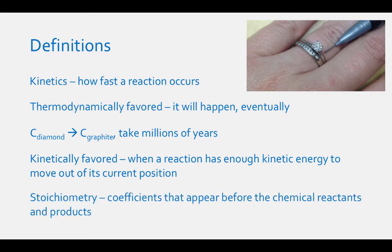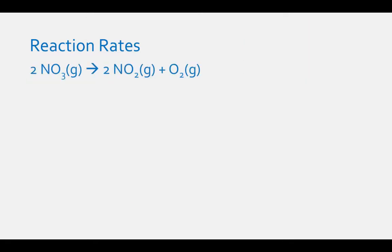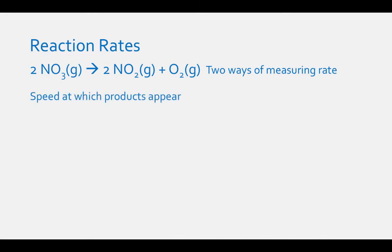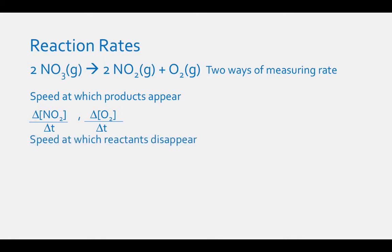The stoichiometry of a chemical reaction are the coefficients that appear before the chemical products and the reactants. Nitrogen trioxide decomposes to NO2 and O2 in the following reaction: 2NO3 gas results in 2NO2 gas plus O2 gas. For this reaction, there are two ways of measuring rate. The first way is the speed at which the products appear — the change in concentration of NO2 and O2 per unit time. The second way is the speed at which the reactants disappear — the change in concentration of NO3 per unit time.